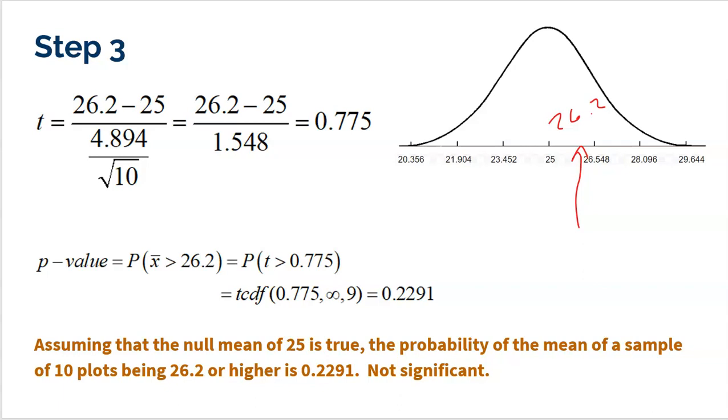So we realize right away that this is not unusually high. This is not significant at all. So I need my p-value to back that up. So the p-value is the probability that any sample is more than mine. So I'm looking at any sample mean being more than my sample mean, 26.2, which is looking greater than a t-score of 0.775. So using t-cdf on my calculator going from 0.775 to infinity, which is going to be a 99. Don't forget the 9 degrees of freedom.